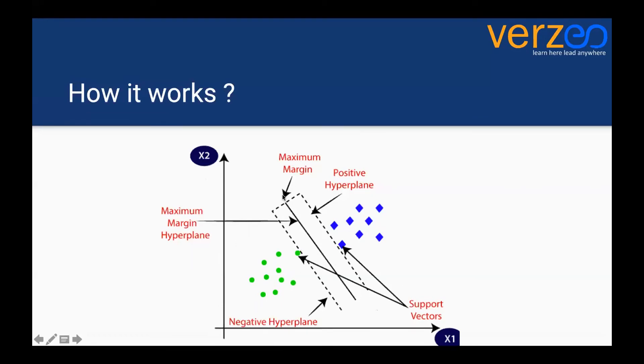You can imagine that there are three things primarily in the SVM. In the middle, if you see, it is the maximum margin hyperplane. What is the maximum margin hyperplane? You can see that this line divides the blue and green dots. You will see that this particular line in the middle is dividing...